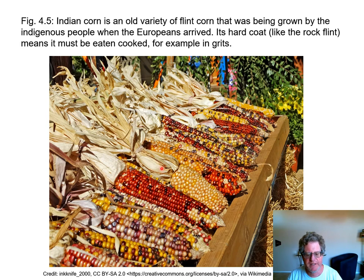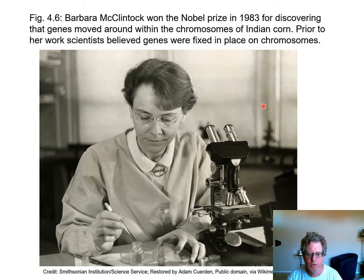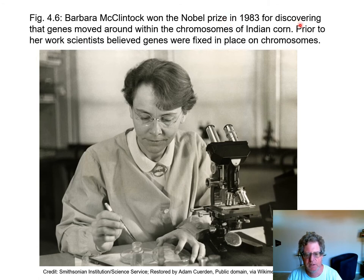Here's Indian corn, called flint corn. It was hard like the rock flint, which is why they call it flint corn. It has to be cooked in order to eat it — cooked into a mush, grits, or polenta. Notice it has many different colored kernels. Barbara McClintock did some work with Indian corn and showed that the genes moved around between the kernels. Before that, people thought genes were fixed in place on the chromosomes and didn't move around. She won the Nobel Prize for that — which is like the Super Bowl of Science — back in 1983.